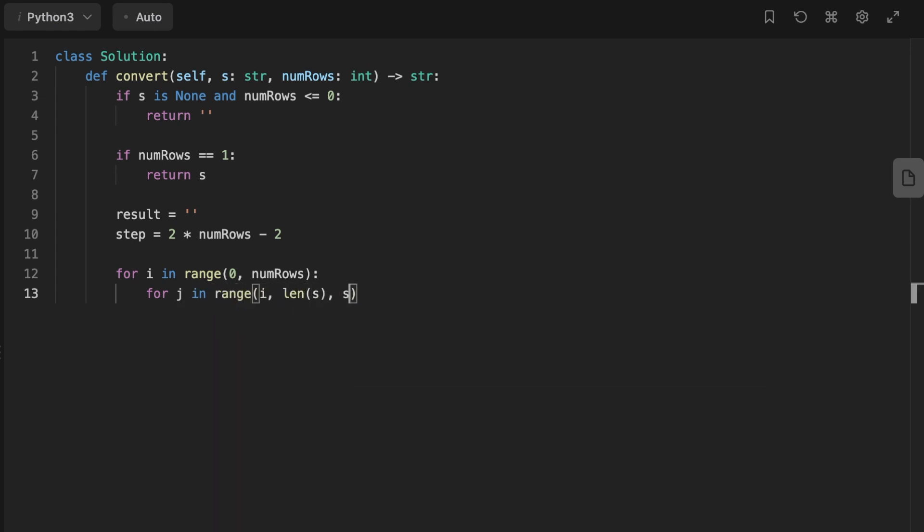After that, we're gonna add the first letter to the result string, and we're gonna jump four steps to read the next letter and add it to the result string. This condition is for the first row and the last row.